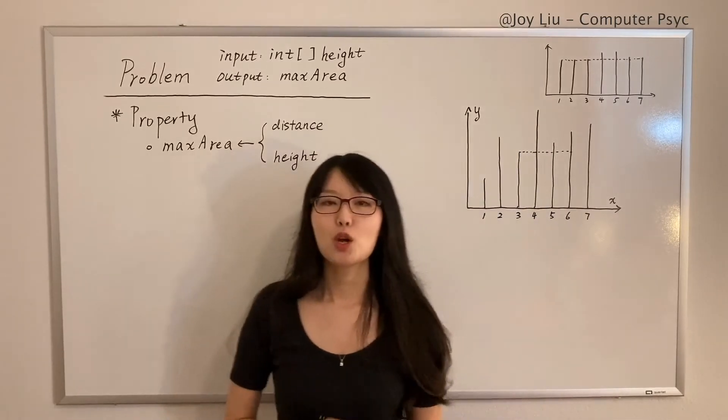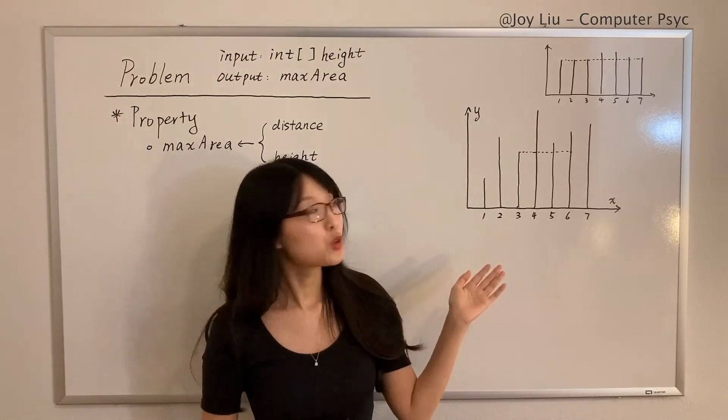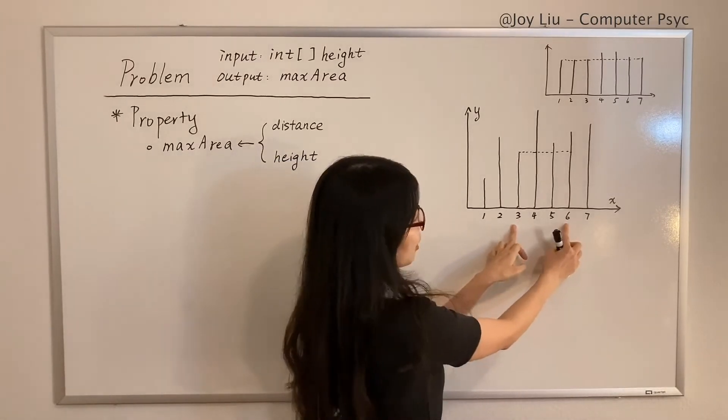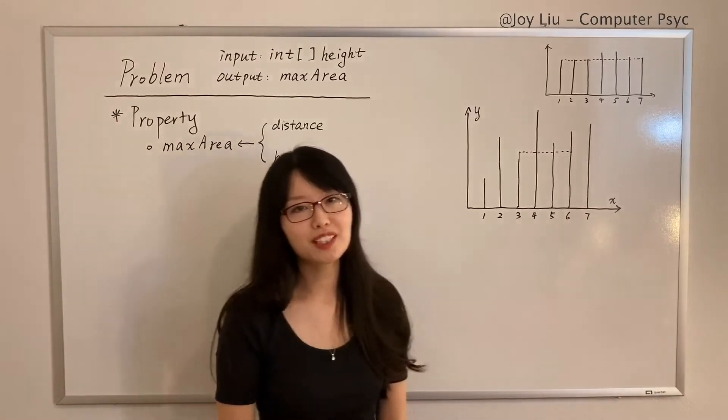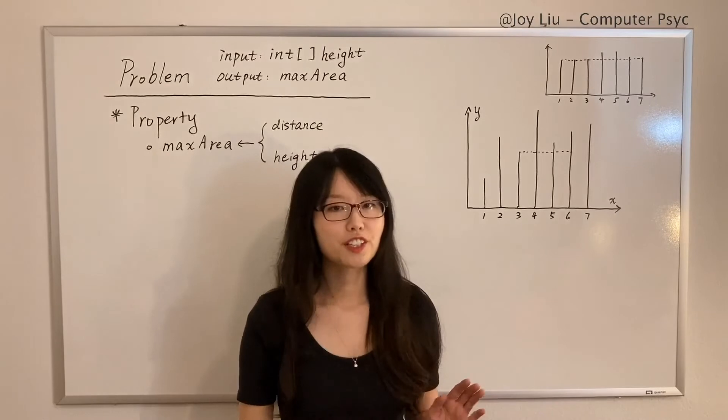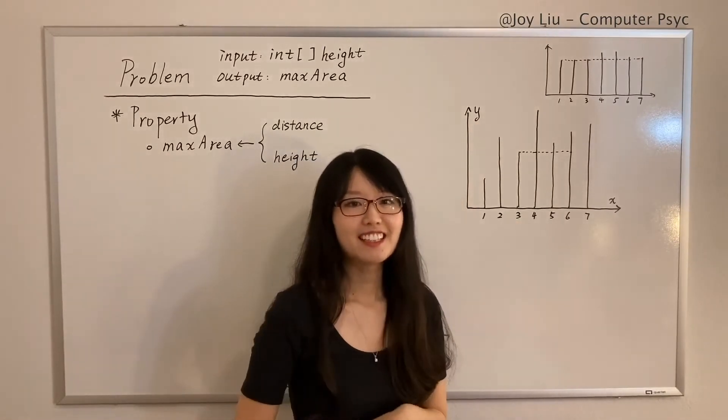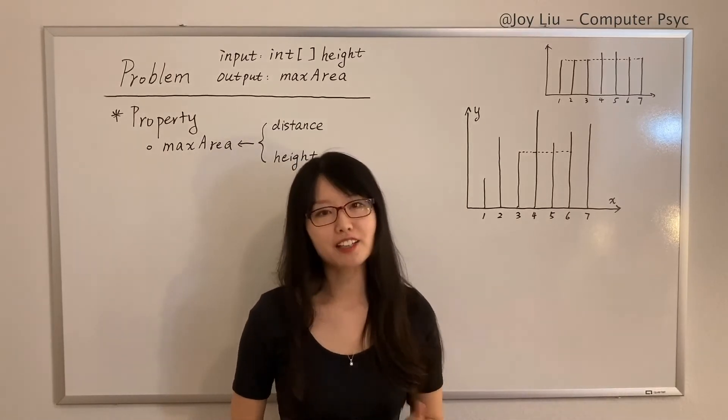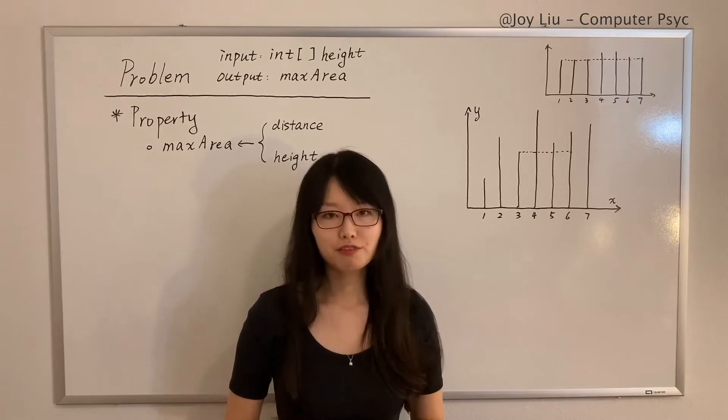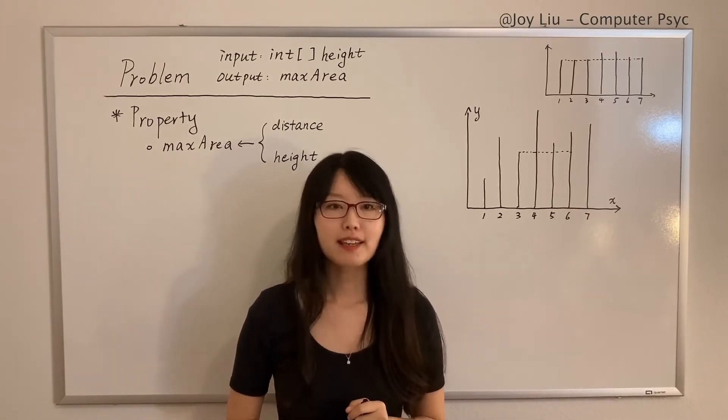Now let's talk about the height. What height will contribute to the area? Do both lines matter, or is one line more important than the other? Yes, the water can't be higher than the height of three—the shorter one. So the height of the shorter line decides the height of the area.